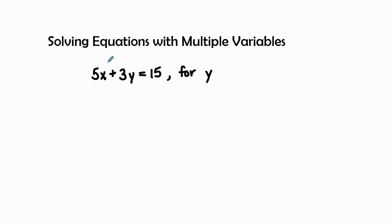Here is our equation: 5x plus 3y equals 15. We have a variable here for x, and we also have a variable y. Now, they're asking us for y. What that means is we want to isolate the variable y all by itself.